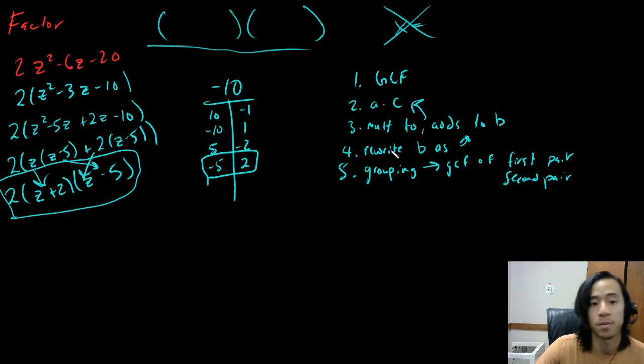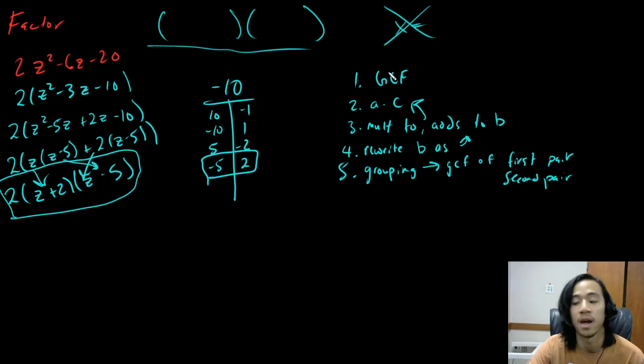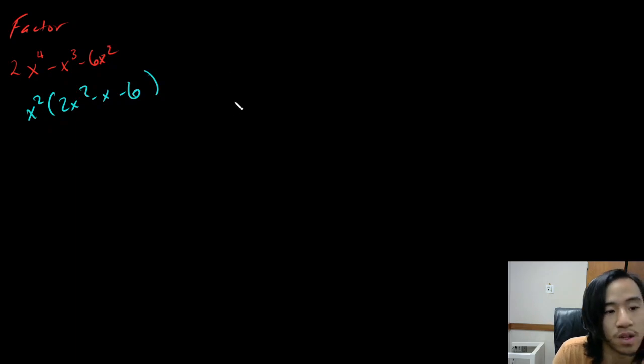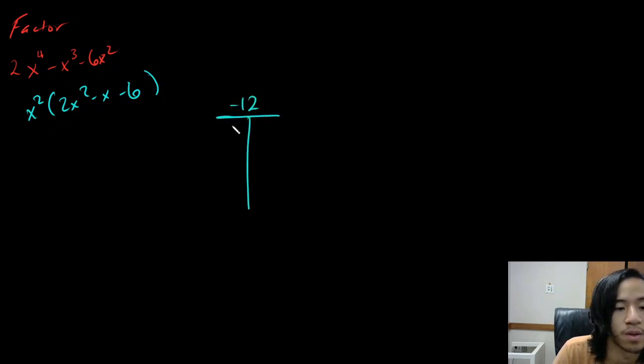All right, let's go ahead and do another example. I'm not going to rewrite these steps again, but I will verbalize them. So here we have another one. Let's go ahead and factor out as much as we can. We have a GCF of X squared, so we can take out X squared and we'll have two X squared minus X minus six. Now let's go ahead and find what to do next. We're going to multiply a times C: two times negative six is negative 12. Make a T chart — we need to find two numbers that multiply to negative 12 and add to negative one.